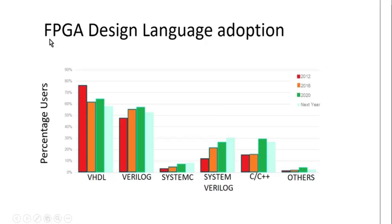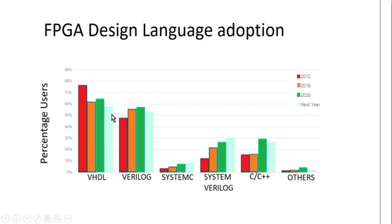Now let's look at another survey by Siemens or Mentor Graphics — the second survey is about FPGA design language. From this survey it is clear that VHDL has more users compared to Verilog, but VHDL has an exponentially falling trend while Verilog is gaining active users. The first bar represents 2012, the third represents 2020, and the fourth represents 2021. In the current year, VHDL and Verilog active users are almost the same. SystemVerilog in FPGA design is also always in an upward trend.